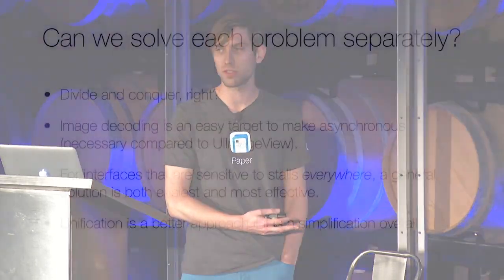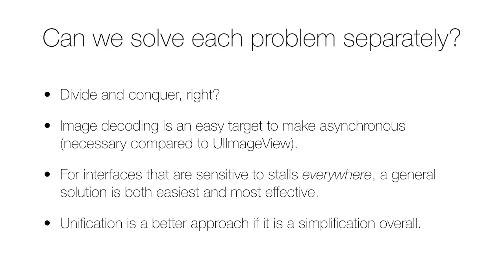Can we actually just solve each of these things separately in a new way? That's definitely a great place to start — divide and conquer. Image decoding is done this way by most applications that do any amount of image decoding, because using UI image view you'd get 500-millisecond stalls on the main thread instead of 5-millisecond stalls. But if you have this sensitivity everywhere in the app, this is challenging to do in all contexts. A comprehensive solution is actually easier from a development perspective and results in better performance as well.